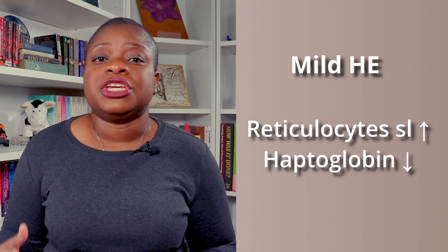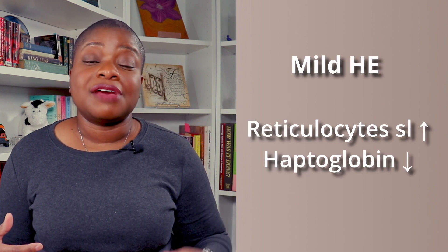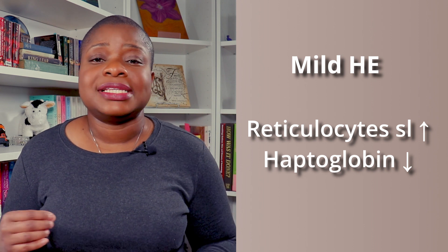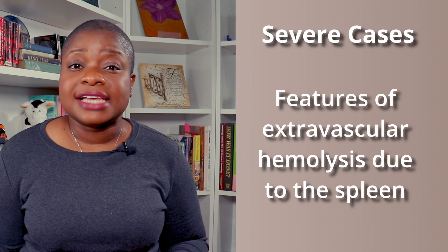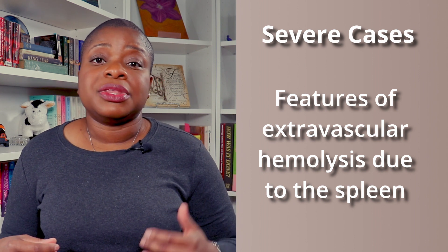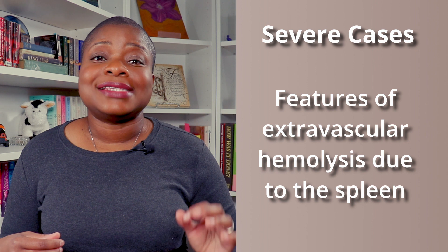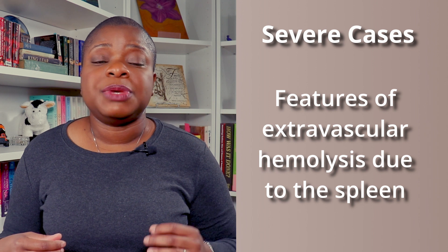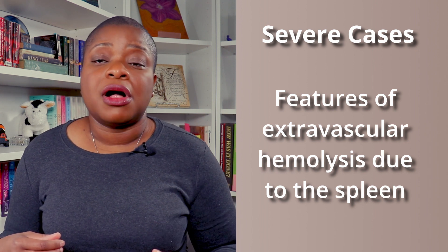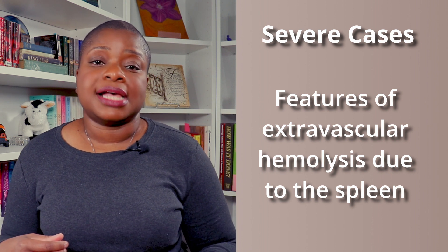Mild HE with mild compensated hemolytic anemia will have slight reticulocytosis and a decreased haptoglobin. In severe cases — spherocytic HE, HE with infantile poikilocytosis, homozygous HE, and HPP — there will be features of extravascular hemolysis due to the spleen removing abnormal cells.